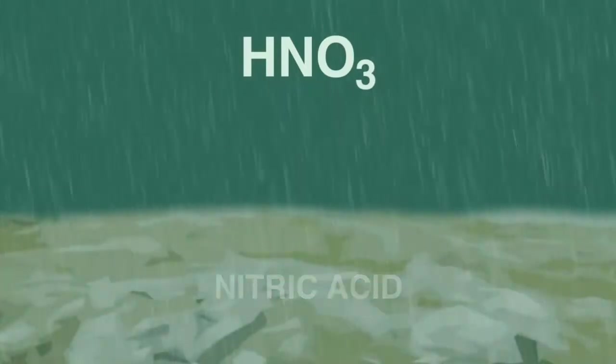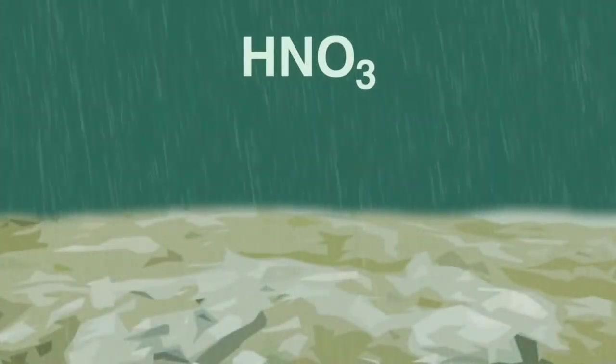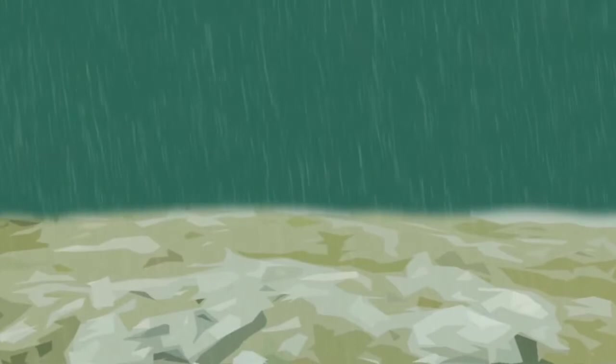If the rain falls on limestone soils which are alkaline, the acidity may be neutralized. However, if the rain lands on neutral or acid soils, or on vegetation, then it can cause damage.